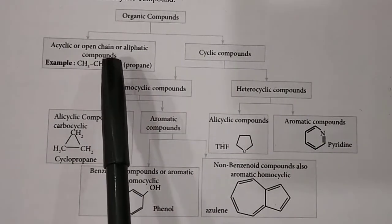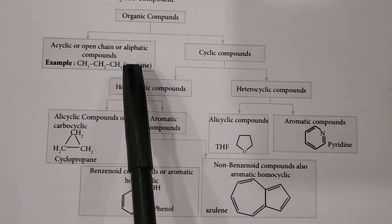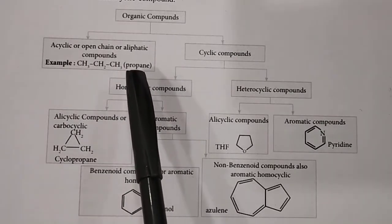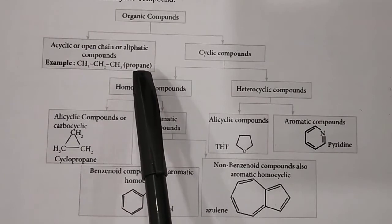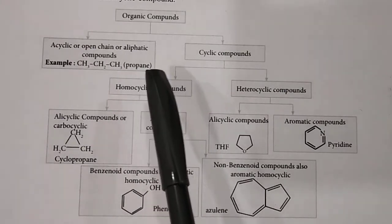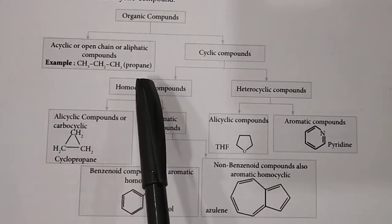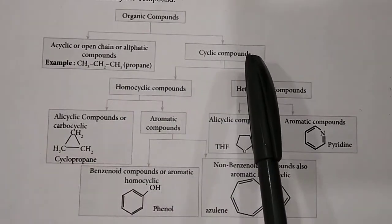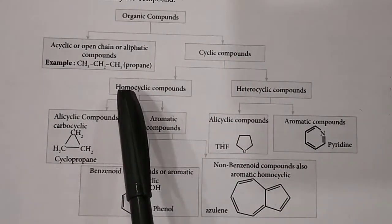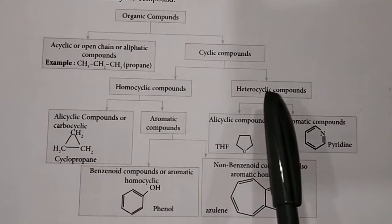Within open chain compounds, you can identify two parts: saturated and unsaturated. Saturated means carbon is associated with carbon via single bond. Unsaturated means carbon is associated with carbon via multiple bonds — double bond or triple bond. Cyclic compounds are subdivided into homocyclic and heterocyclic.